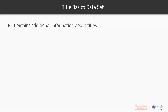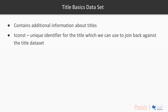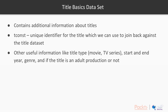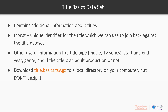There's also the title basics dataset. This contains additional information about titles not in the title dataset. The tconst field is the unique identifier for the title, which we can use to join back against the title dataset — that's one of the key columns we join against. Other useful information includes title type (is it a movie, TV series, documentary, or something else?), start and end year, genre, and whether a title is an adult production or not — for many use cases, we would probably want to filter those out. To get this, download title.basics.tsv.gz.